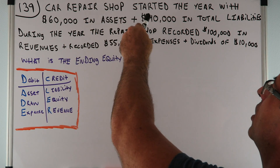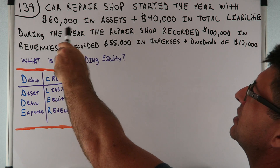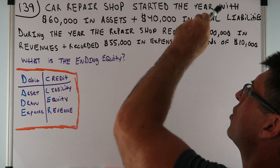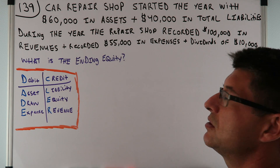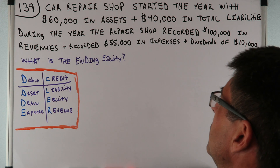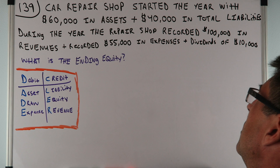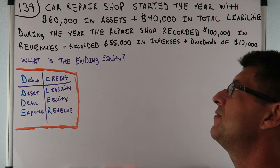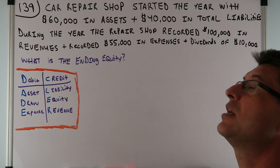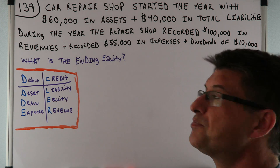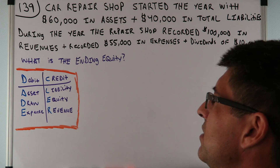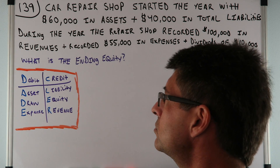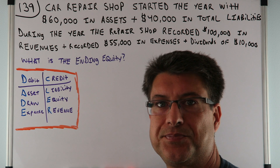Car repair shop started the year with $60,000 in assets and $40,000 in total liabilities. During the year, the repair shop recorded $100,000 in revenues and recorded $55,000 in expenses. Dividends of $10,000. What's the ending equity?